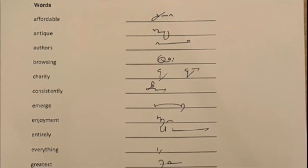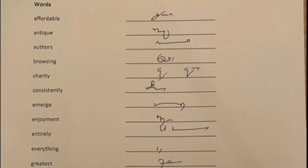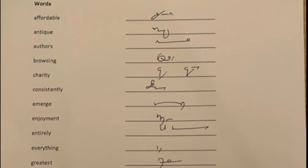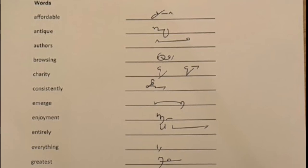Browsing uses the BR blend so when BR comes together the next consonant, in this case the W, goes inside.